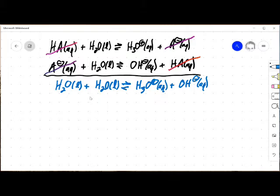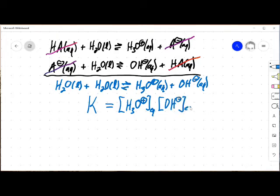So my K is just going to be H3O+ concentration at equilibrium times OH- concentration at equilibrium. And this specific equilibrium is called Kw, which is the autoionization constant for water.